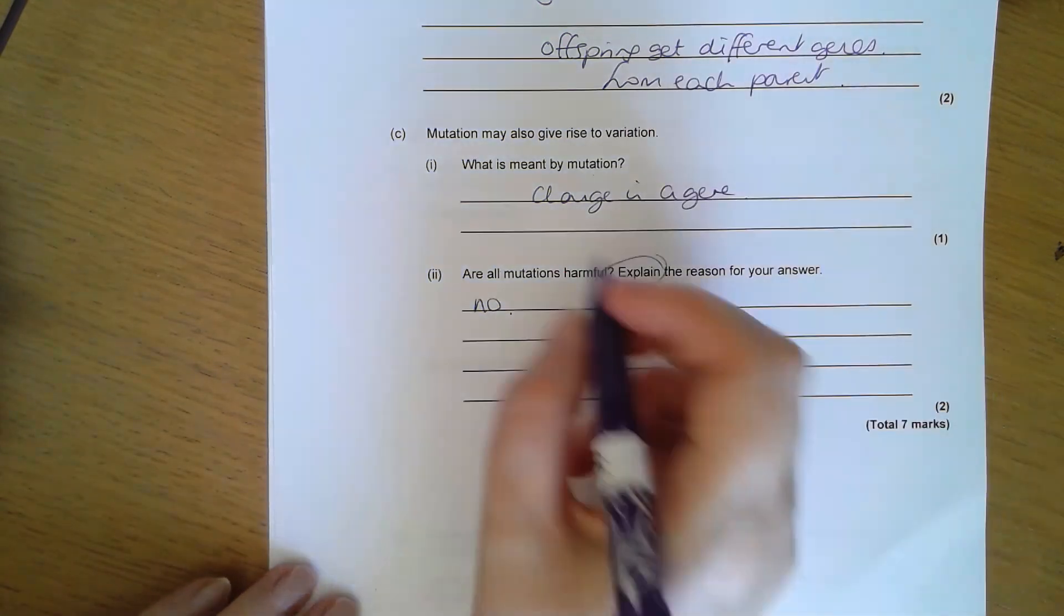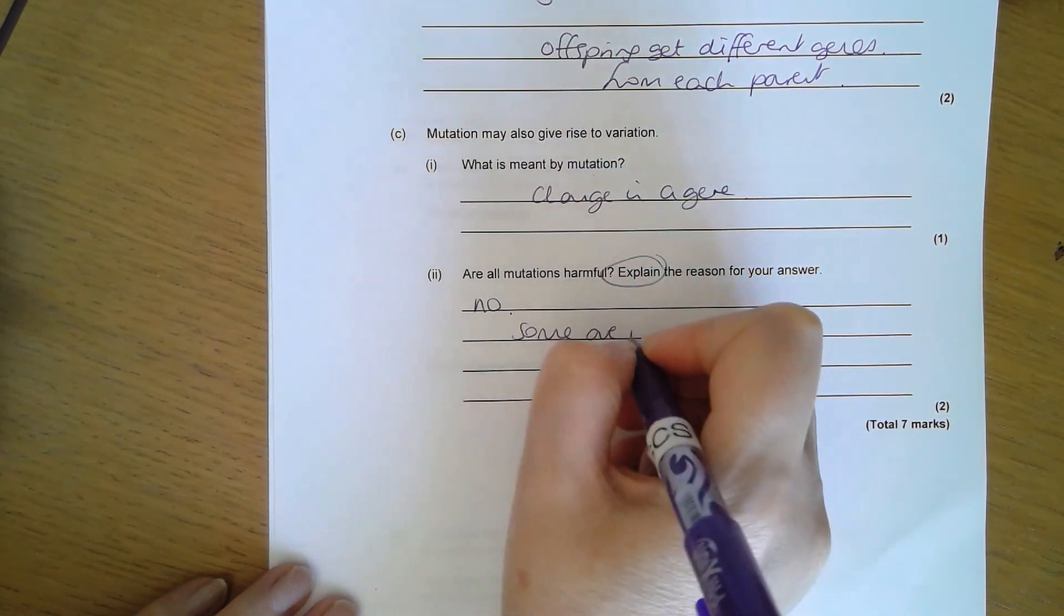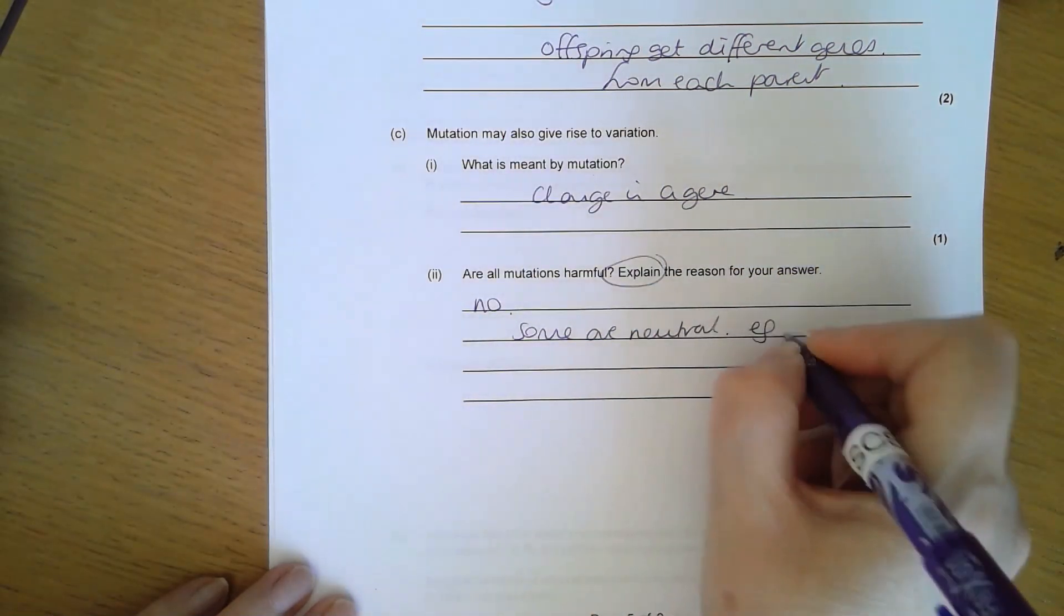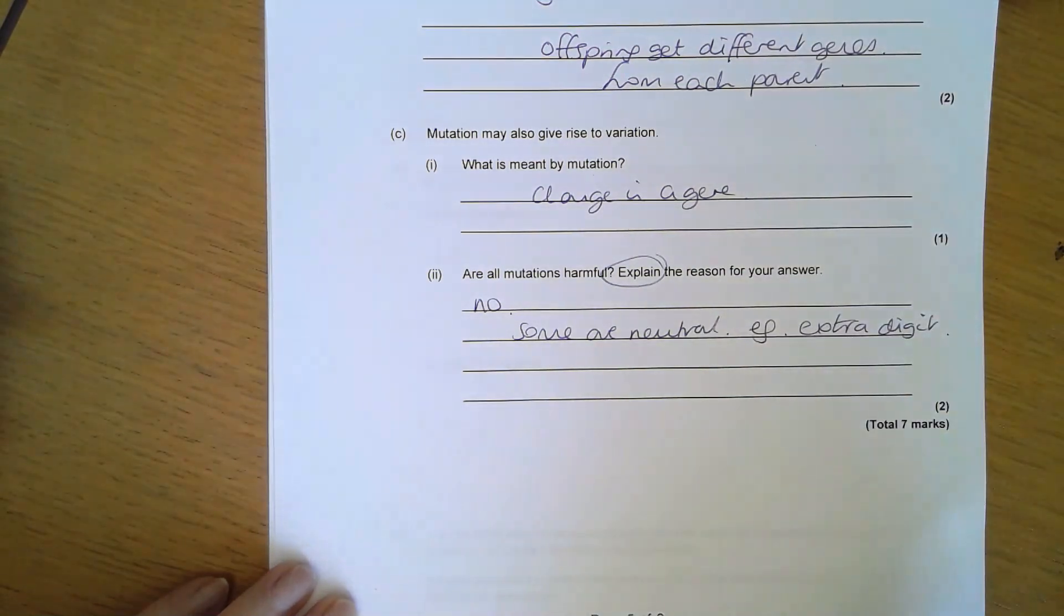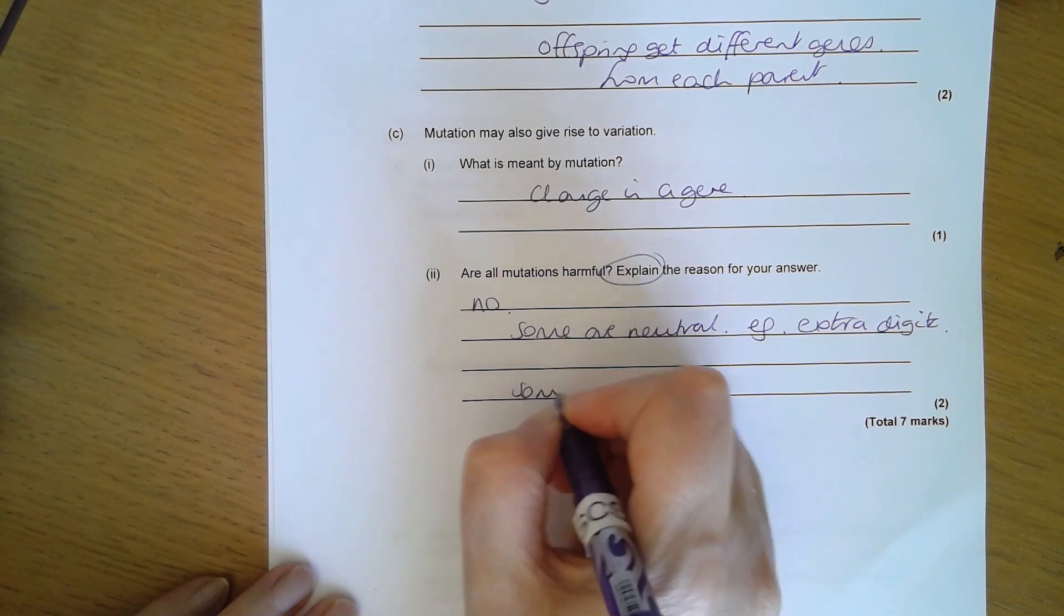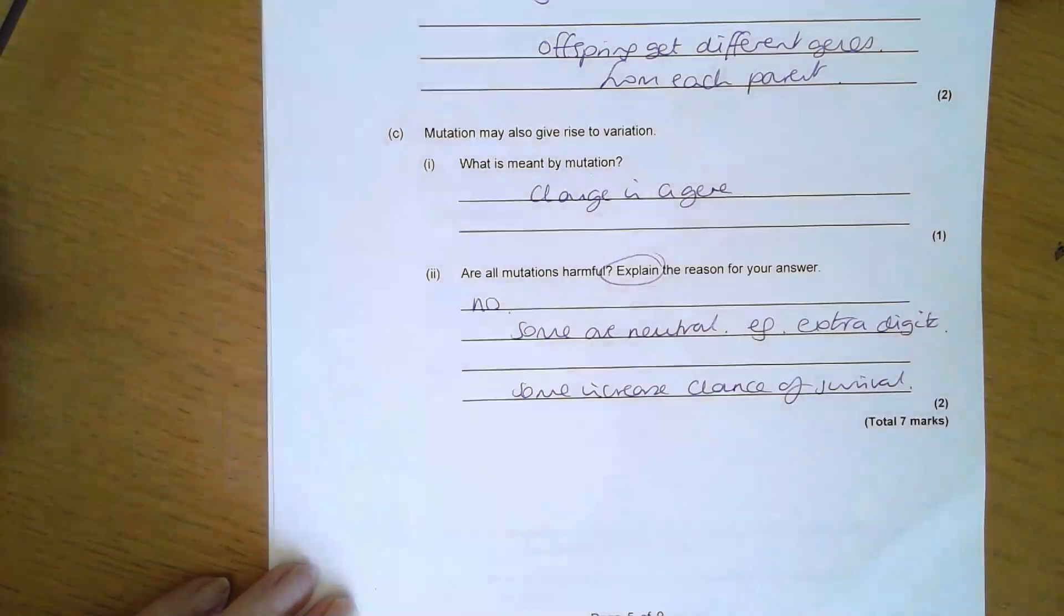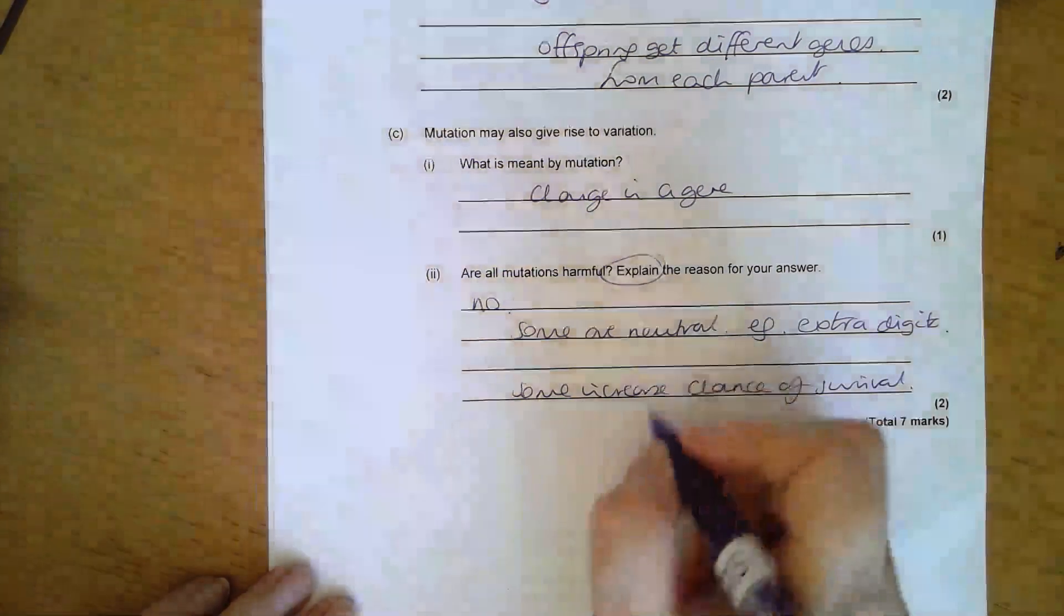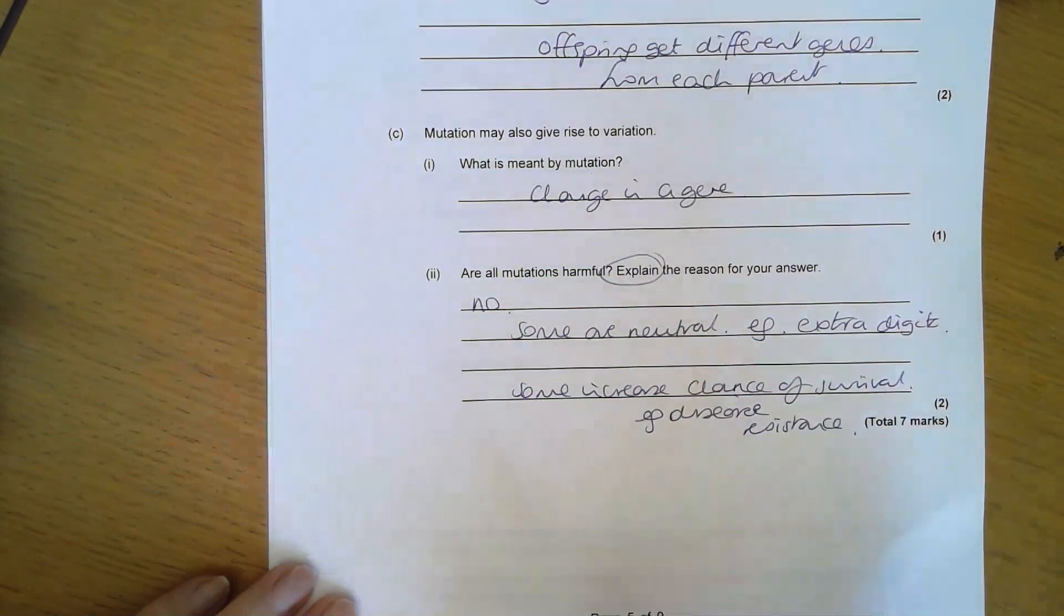I could say any two of these: Some are neutral or some don't have an effect, and I could give an example like the one we looked at where you get an extra digit. That's a neutral mutation. Or I could also say that some actually increase the chance of survival, so things like antibiotic resistance, resistance to disease, things like that.